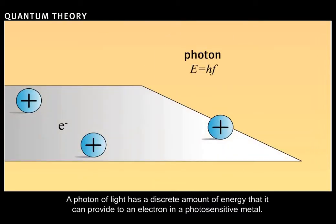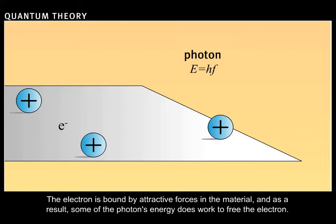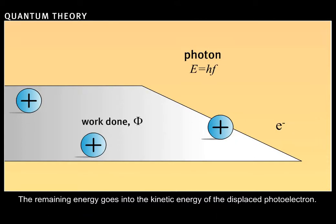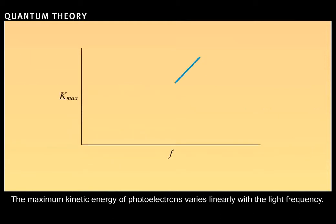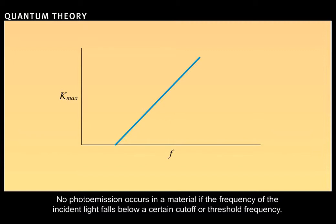A photon of light has a discrete amount of energy that it can provide to an electron in a photosensitive metal. The electron is bound by attractive forces in the material, and as a result, some of the photon's energy does work to free the electron. The remaining energy goes into the kinetic energy of the displaced photoelectron. The maximum kinetic energy of photoelectrons varies linearly with the light frequency. No photoemission occurs in a material if the frequency of the incident light falls below a certain cutoff or threshold frequency.